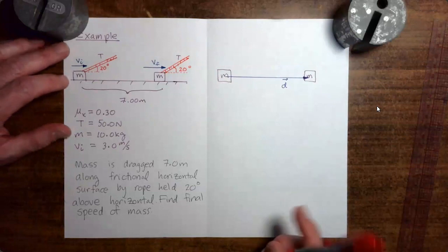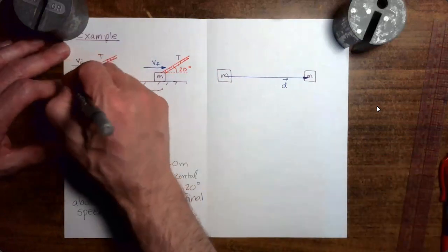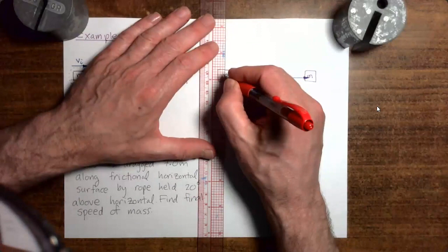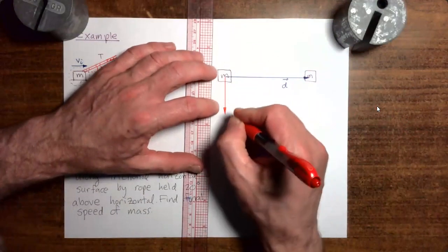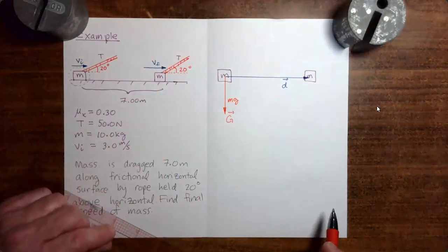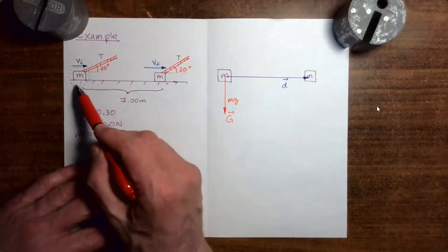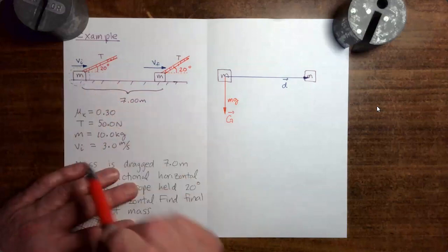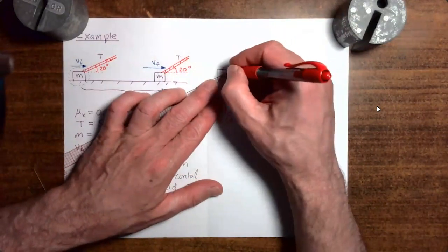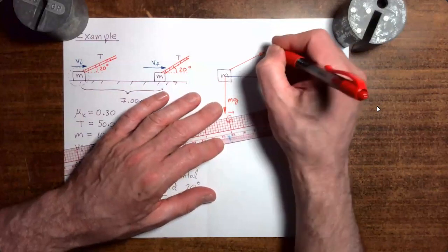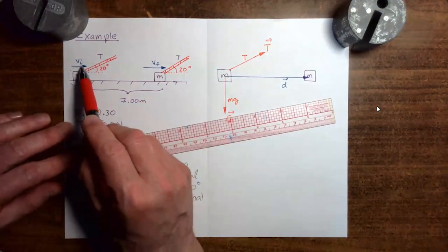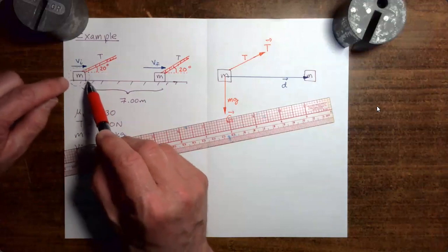So we're going to draw the force diagram as usual. We start by drawing a dashed line around the object. We then draw in, as our first force vector, the gravitational force, with magnitude mg. Once we've drawn in the gravitational force, we can identify all the other forces by going around the dashed line to see what's reaching in through it to touch the mass. Up here, we see the string reaching in through the dashed line, so I put in a tension force, magnitude T.